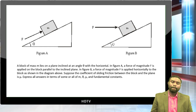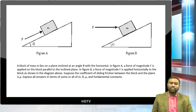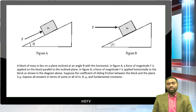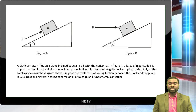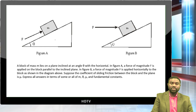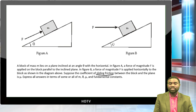Now the last problem — quite an interesting coupled one. A block of mass m lies on a plane inclined at angle theta with the horizontal. In figure A, a force of magnitude F is applied parallel to the inclined plane. In figure B, a force of magnitude F is applied horizontally. The coefficient of sliding friction between the block and the plane is mu. The inclined plane is rough.